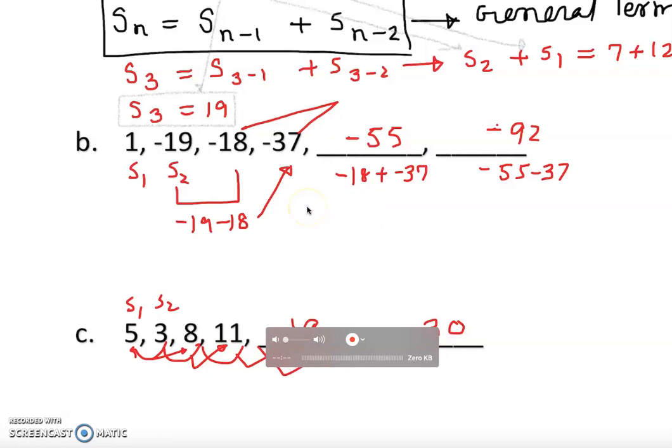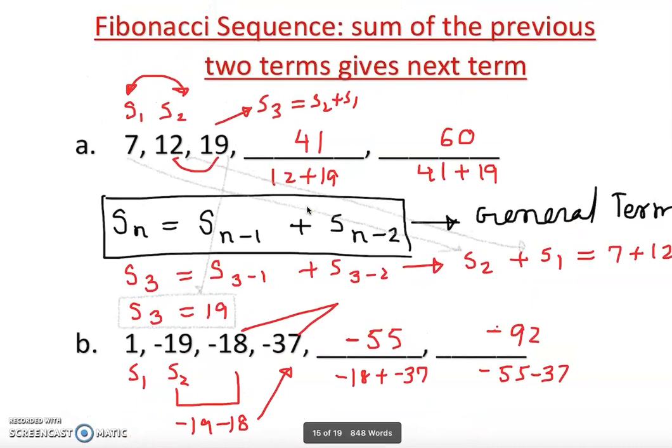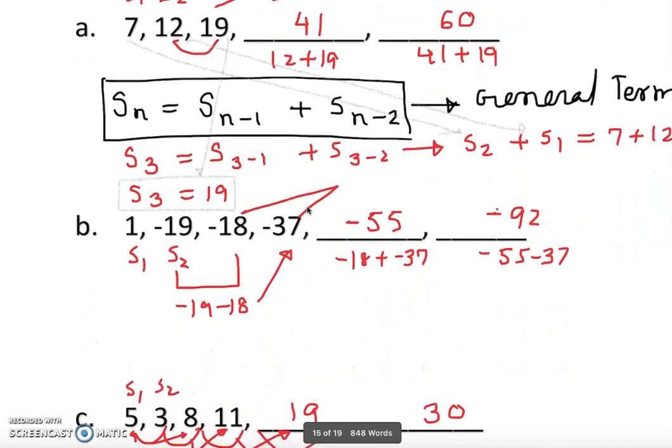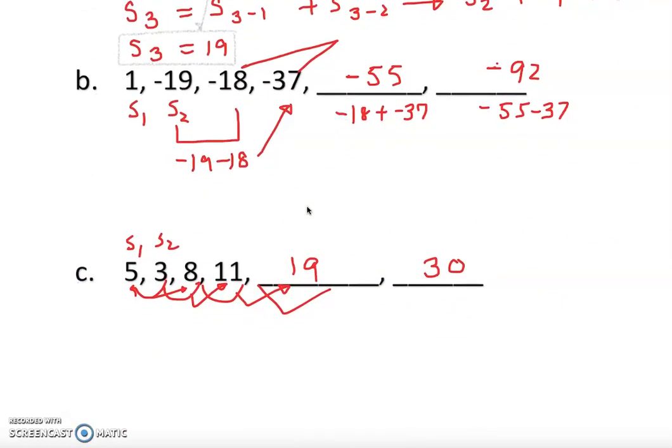Which was straightforward as you see. I hope you understand. So, that is how we find the Fibonacci sequence or missing numbers given. Thank you.